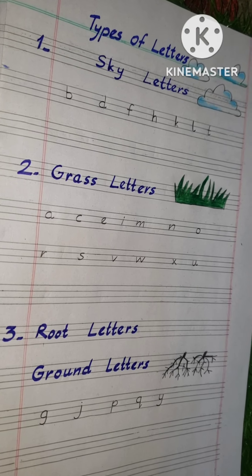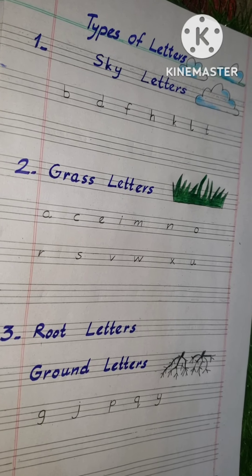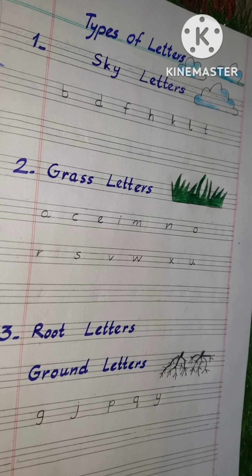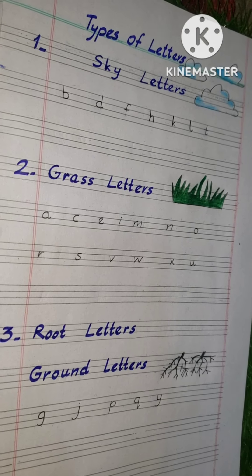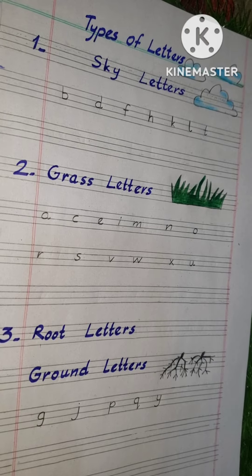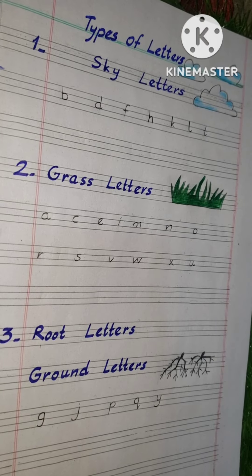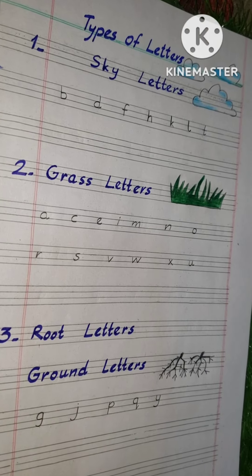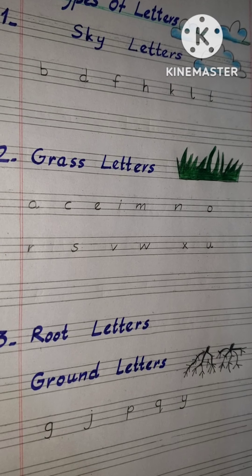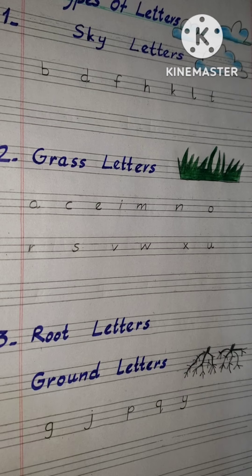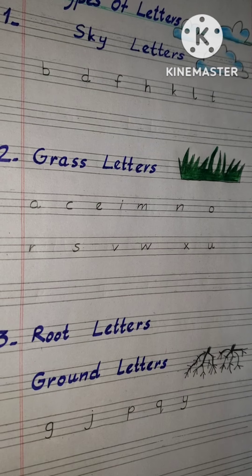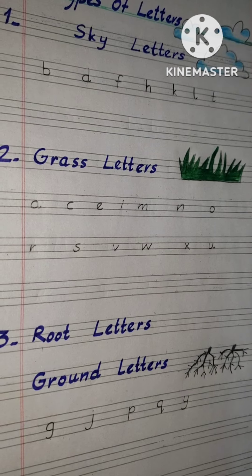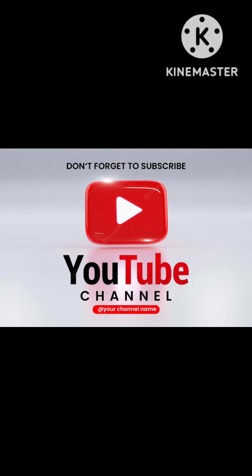So these are the three types of letters: sky letters, grass letters, and root letters. Practice makes a man perfect, so keep practicing.